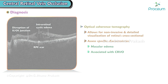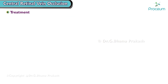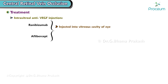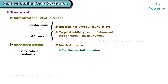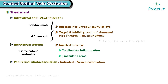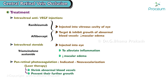Finally, let's talk about treatment. The treatment options for central retinal vein occlusion include the following. Intravitreal anti-VEGF injections: medications such as ranibizumab or aflibercept are injected into the vitreous cavity to target and inhibit abnormal blood vessel growth, reducing macular edema. Intravitreal steroids: in some cases, steroids like triamcinolone acetonide may be injected to alleviate inflammation and reduce macular edema. Panretinal photocoagulation: when neovascularization occurs, laser therapy can be performed to shrink abnormal blood vessels, prevent further growth, and reduce the risk of complications.